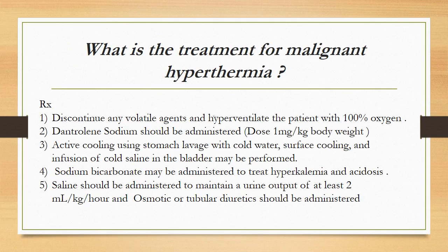What is the treatment for malignant hyperthermia? Treatments are: 1) discontinue any volatile agents and hyperventilate the patient with 100% oxygen; 2) dantrolene sodium should be administered at a dose of 1 milligram per kilogram body weight; 3) active cooling using stomach lavage with cold water, surface cooling, and infusion of cold saline; 4) sodium bicarbonate may be administered to treat hyperkalemia and acidosis; 5) saline should be administered to maintain a urine output of at least 2 mL/kg/hour and osmotic or tubular diuretics should be administered.